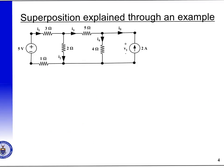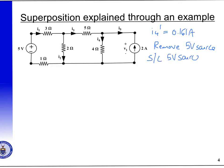So I4 dashed equals 0.161 amps, and that's due to the voltage source only acting. Now we're going to remove the voltage source and see what I4 is with just the current source acting. Remember that to remove the voltage source we short circuit it, so we're going to short circuit the 5 volt source and work out what the effect of only the 2 amp source is.